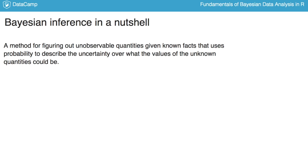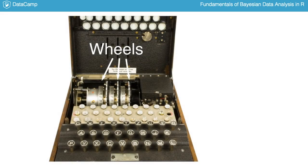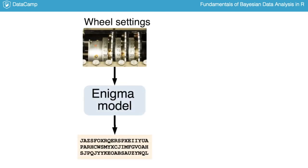In the case of the Enigma machine, the unknown quantity Alan Turing wanted to figure out was the configuration of the three wheels. The person encrypting the message selected these wheels from a pool of eight different wheels, and their position defined how messages were encrypted. But if you're not the person who encrypted the message, you don't know which wheels were used or what positions they had. The British had a working model for how specific wheel settings produced encrypted messages, but really wanted to figure out the opposite: given these secret messages, what were likely the settings of the wheels that produced them? Alan Turing's solution was to use Bayesian inference to work backwards from the encrypted messages to arrive at the probable settings of the wheels.